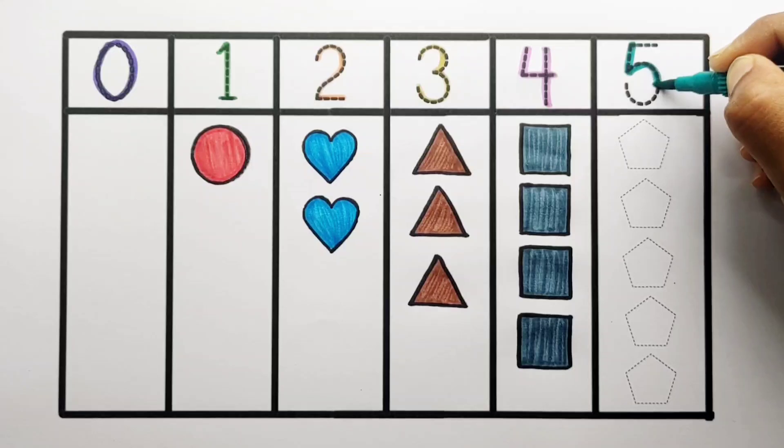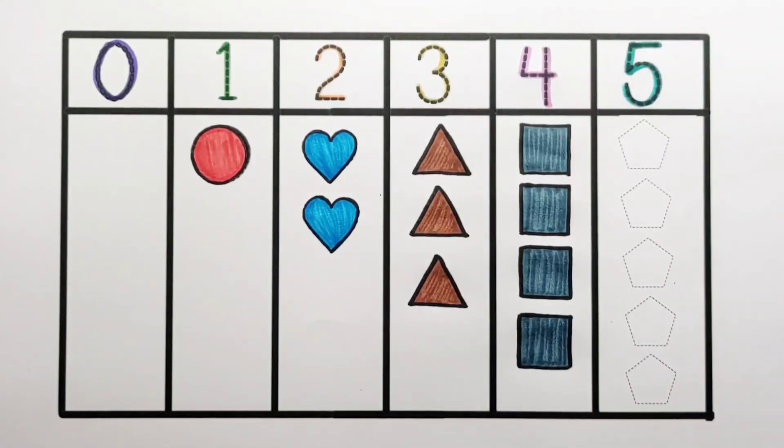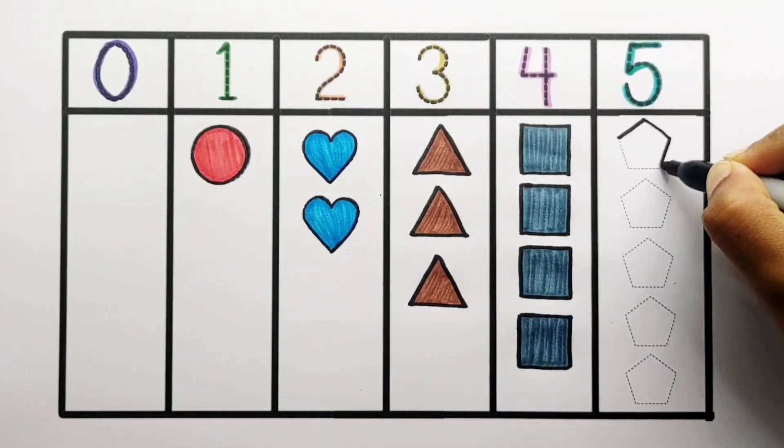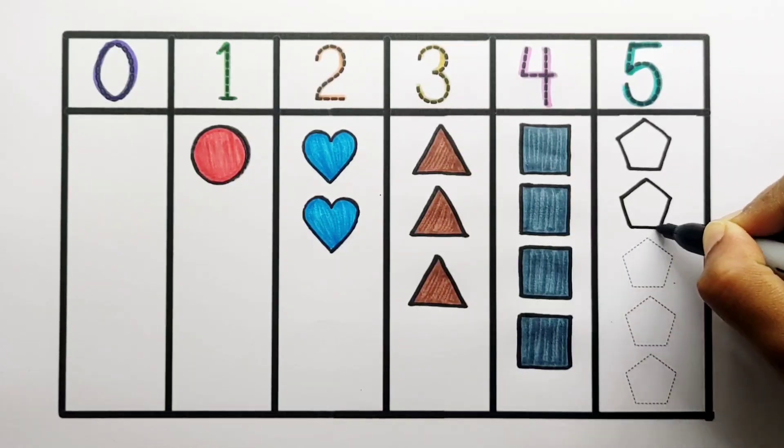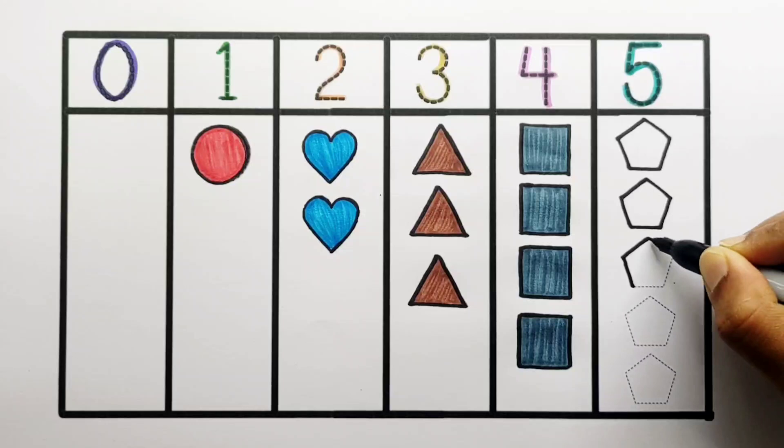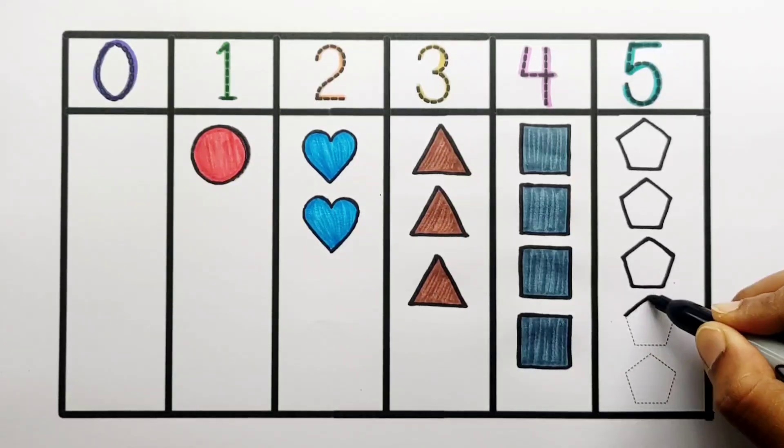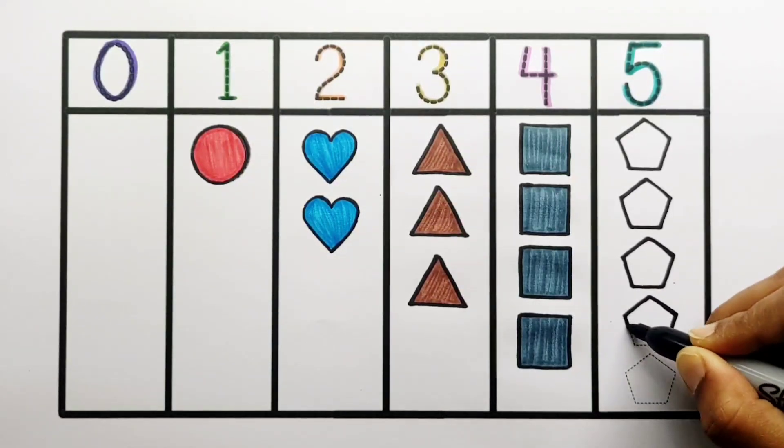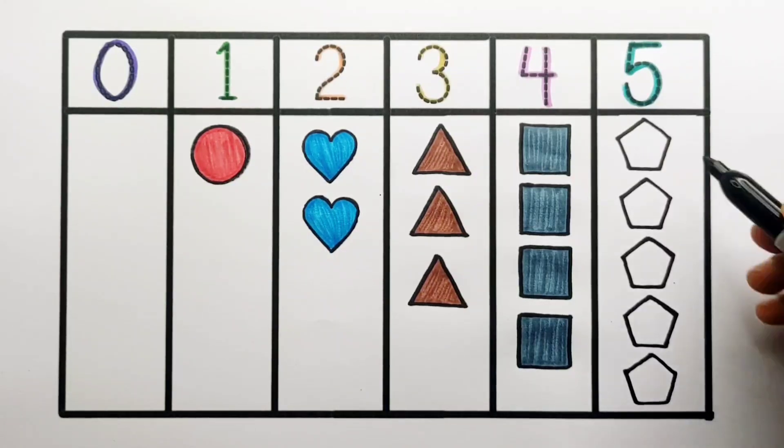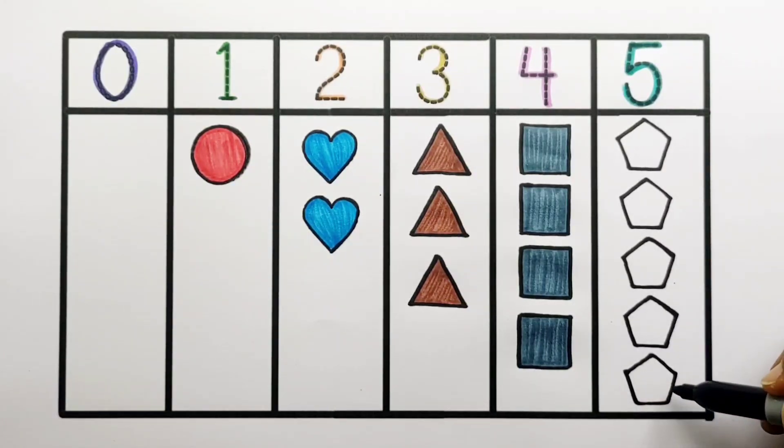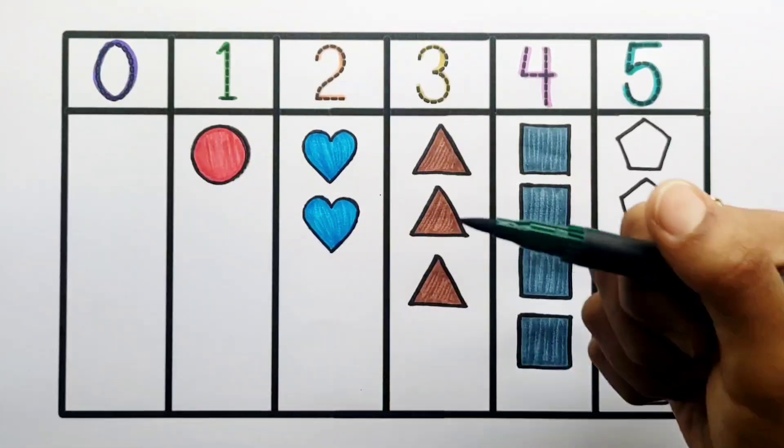Number 5. One, two, three, four, five - five pentagons, green color.